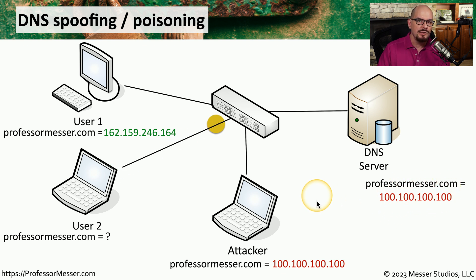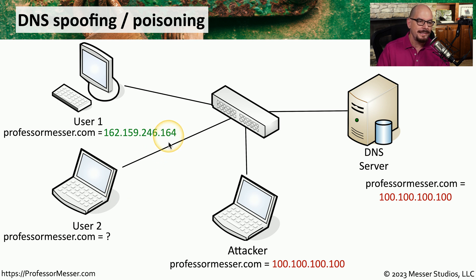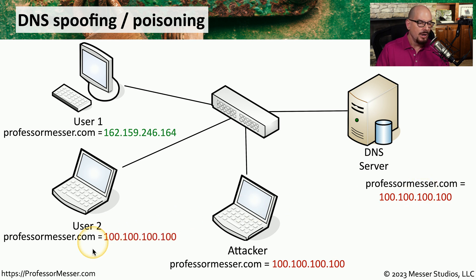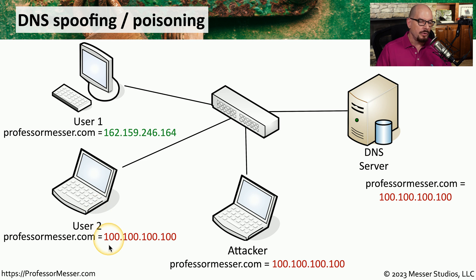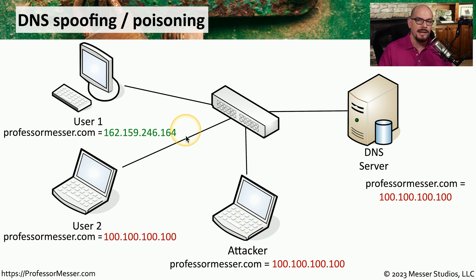This means that any subsequent requests made to the DNS server — for example, from User 2 — will result in a response that doesn't contain the correct IP address. Instead, User 2 will receive the IP address that has been changed by the attacker, 100.100.100.100. Any subsequent requests to professormesser.com from User 2 will go to the attacker's computer instead of the legitimate IP address for the Professor Messer website.